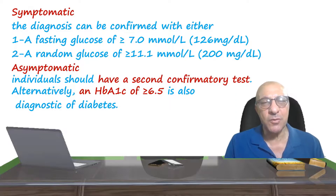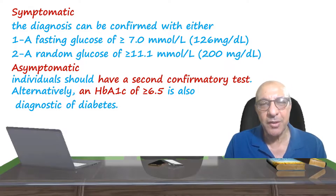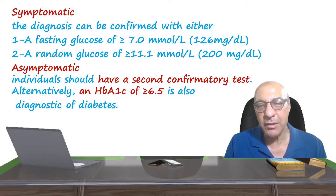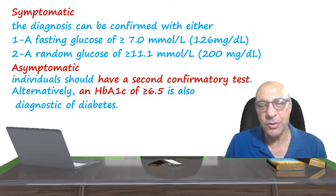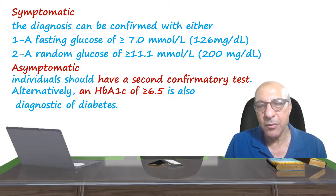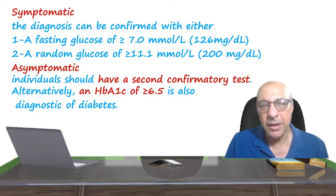Regarding actual diagnosis, we have two situations. When patients present with symptoms suggestive of diabetes mellitus — such as polydipsia (drinking too much), polyuria (urinating too much), or dehydration — we can rely on either a fasting glucose of 126 mg/dL (equal to 7 mmol/L) or a random blood sugar of 11.1 mmol/L (200 mg/dL). Any one of these two in the presence of symptoms is sufficient to diagnose diabetes mellitus.